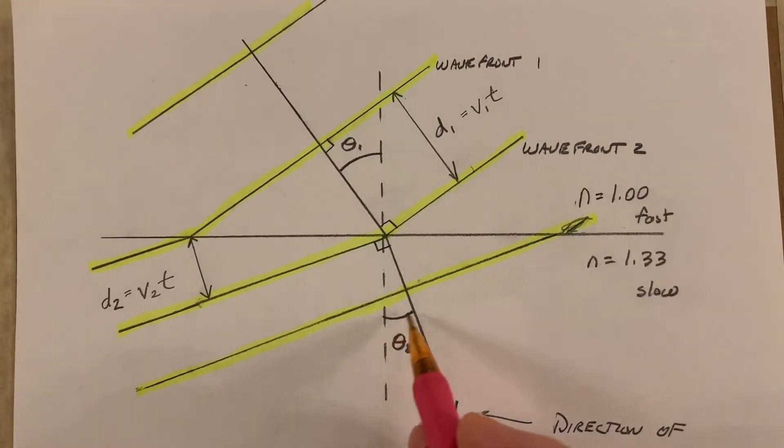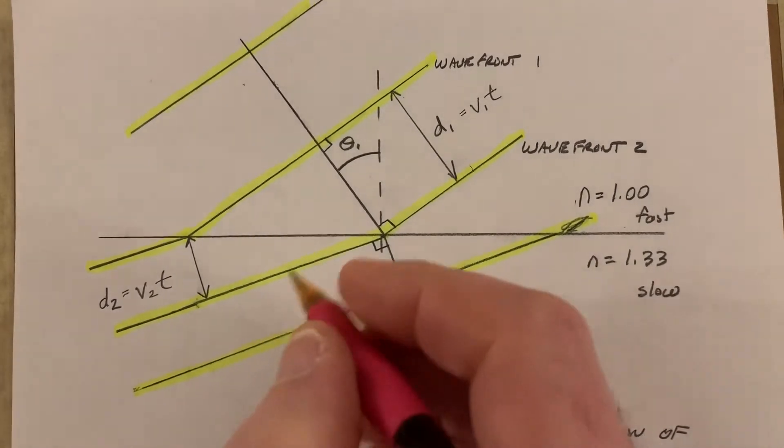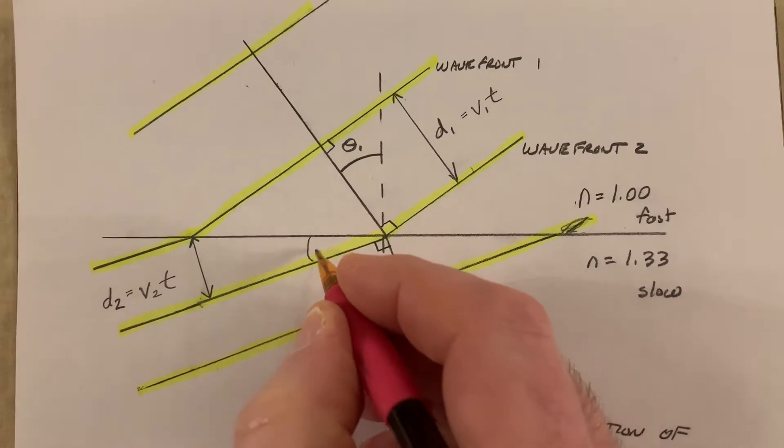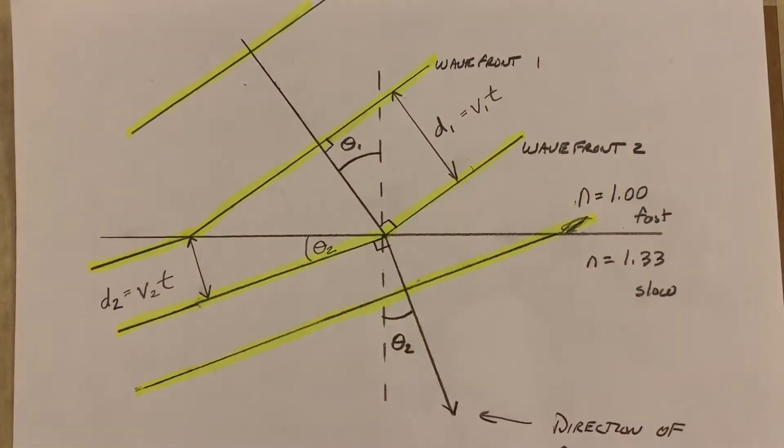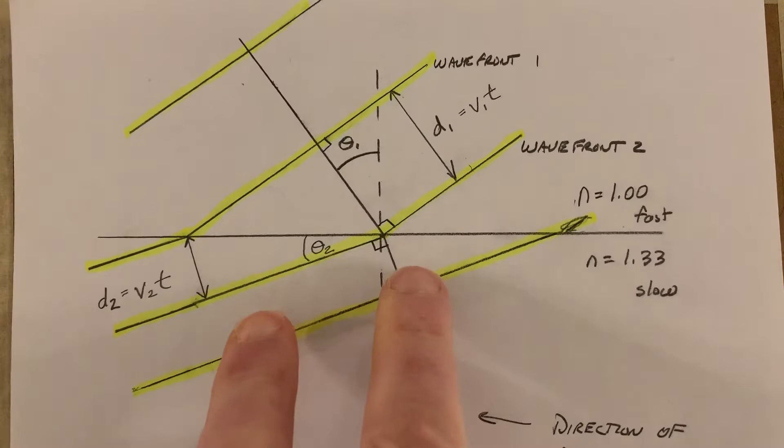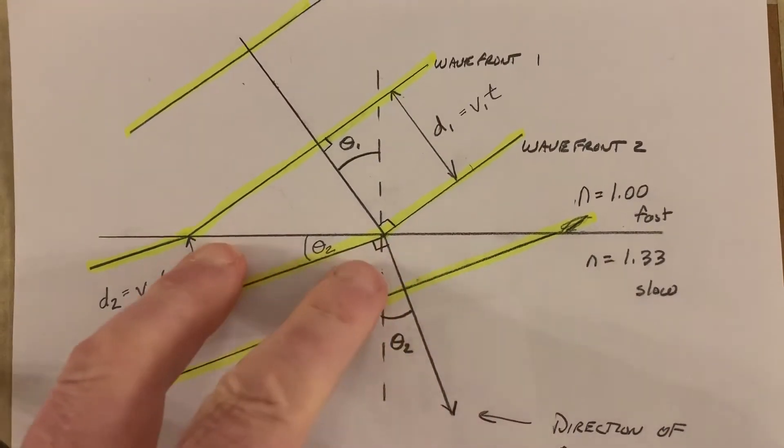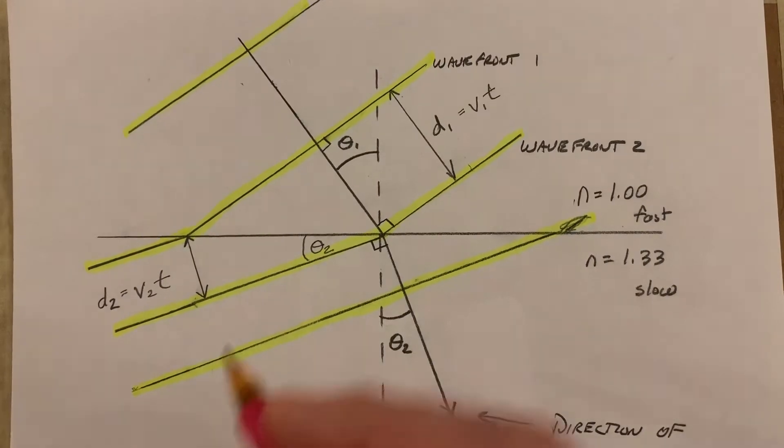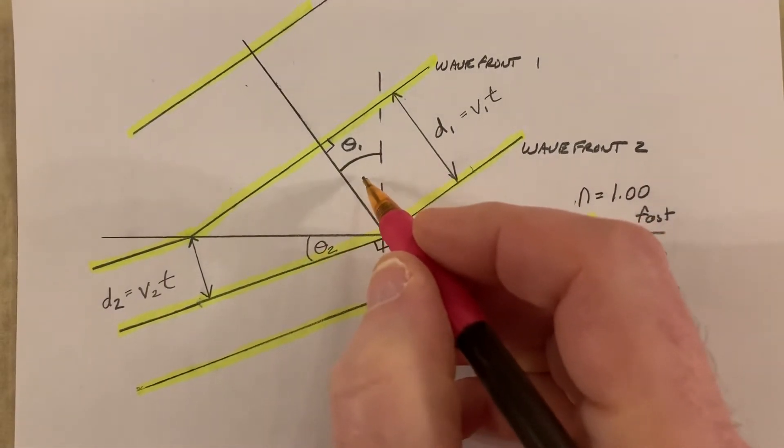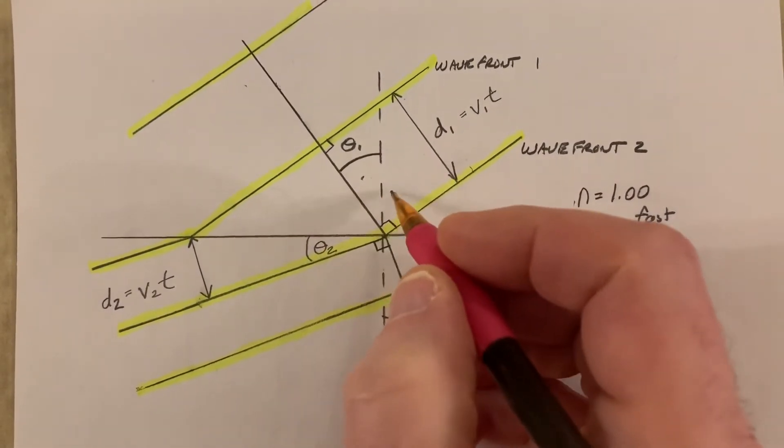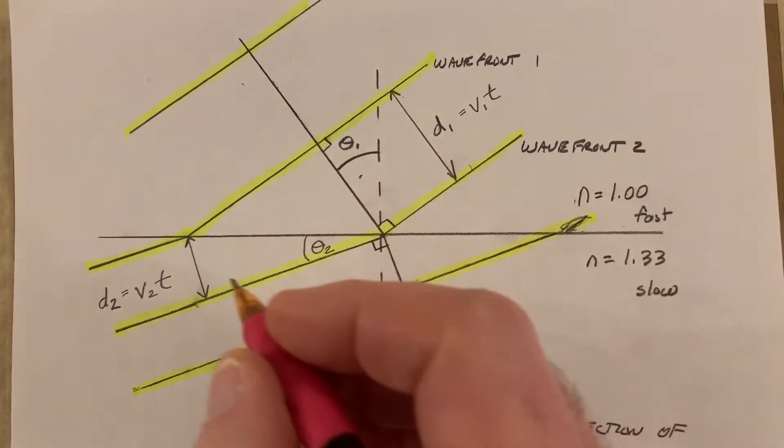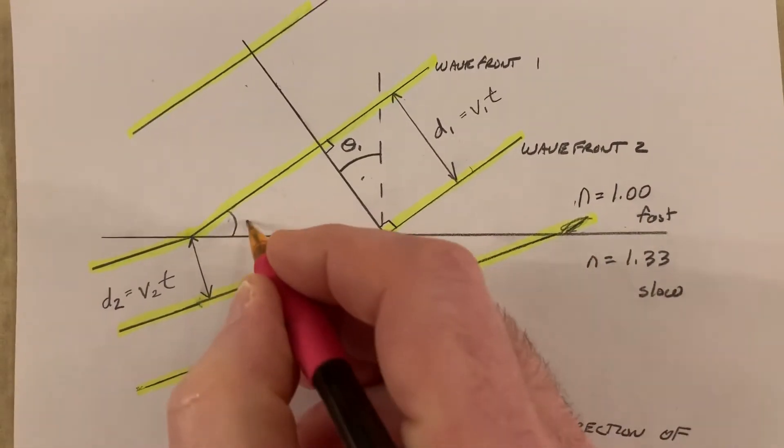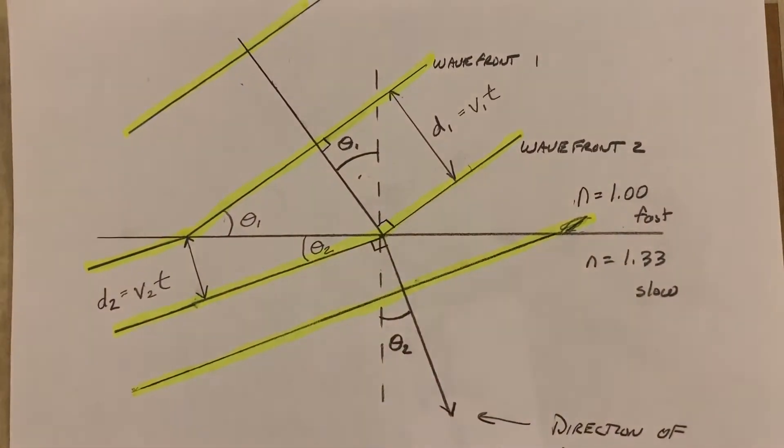This theta 2 here is exactly the same thing as theta 2 right there. It's like taking this right triangle, that right angle, then just twisting it, an angle theta 2 over. It's the same exact angle. And this angle theta 1, which happens to be right here, happens to be the same exact angle as over there, theta 1.